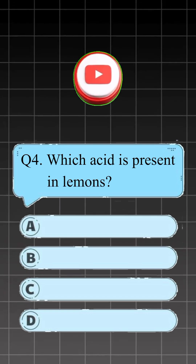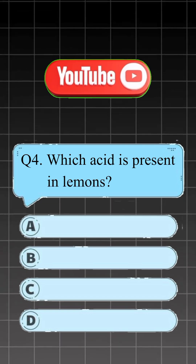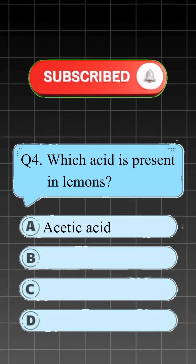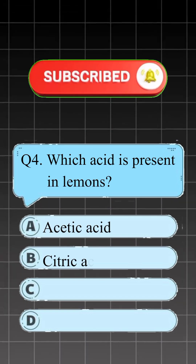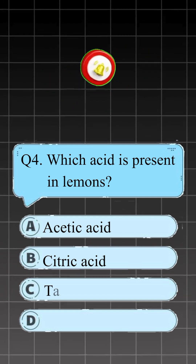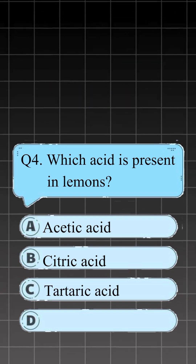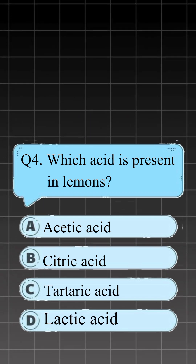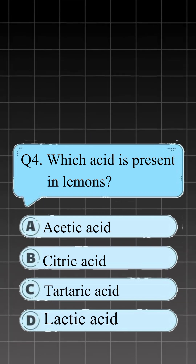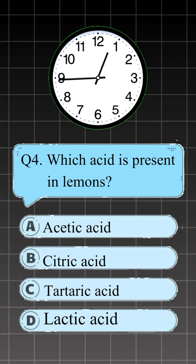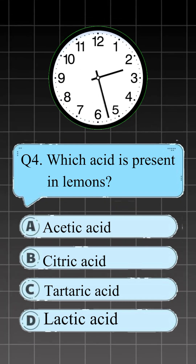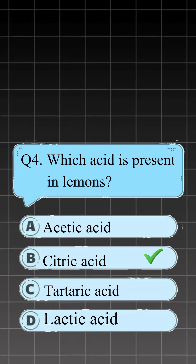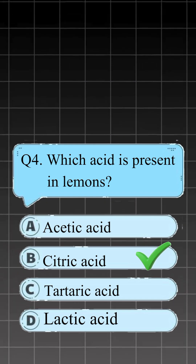Question 4. Which acid is present in lemon? A, acetic acid; B, citric acid; C, tartaric acid; D, lactic acid. Right answer is B, citric acid.